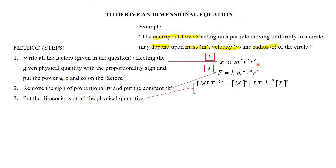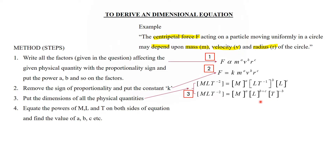Step three: substitute the dimensions of all physical quantities. Force is [MLT⁻²], k is dimensionless, m is [M], v is [LT⁻¹], and r is [L], with all powers retained. Rearranging, L appears at two places giving L^(b+c), and T gives T^(−b).